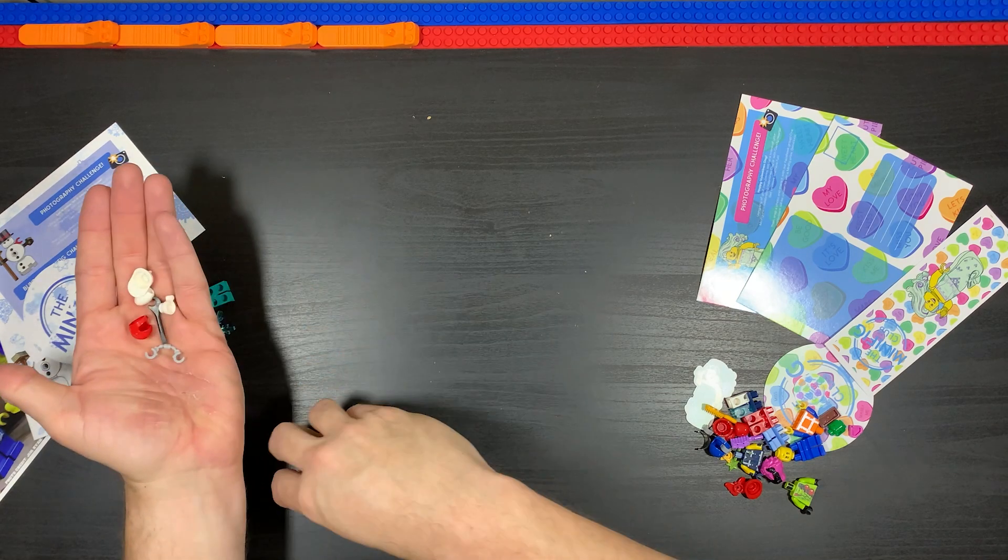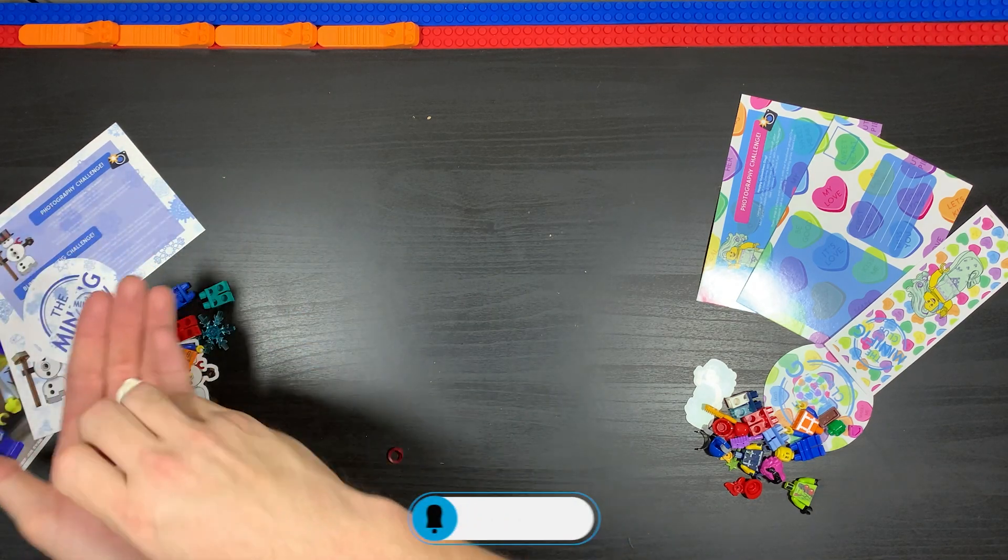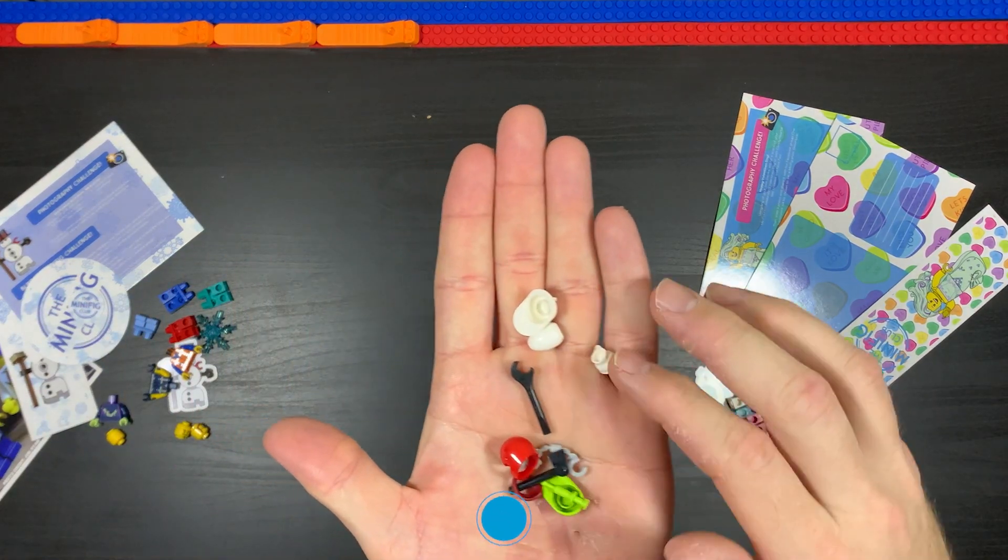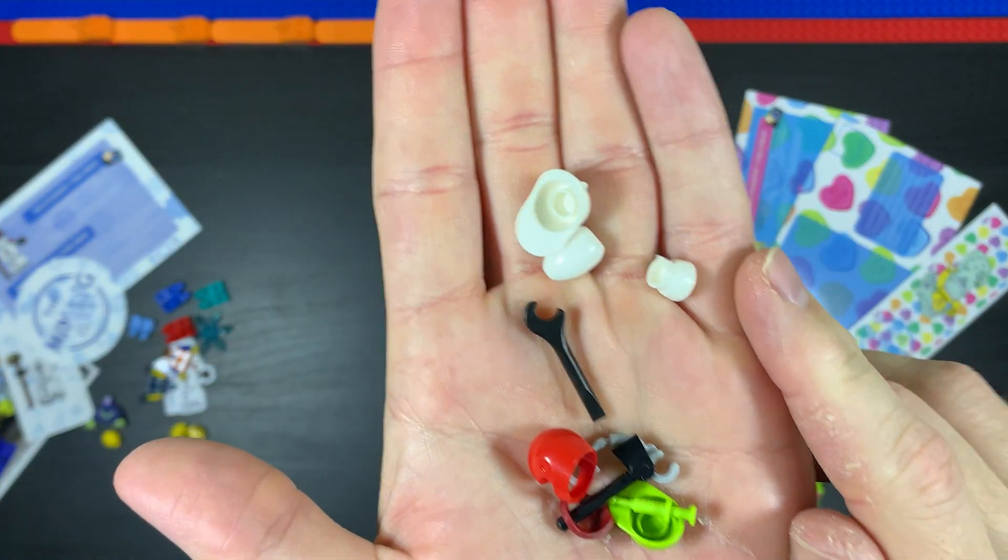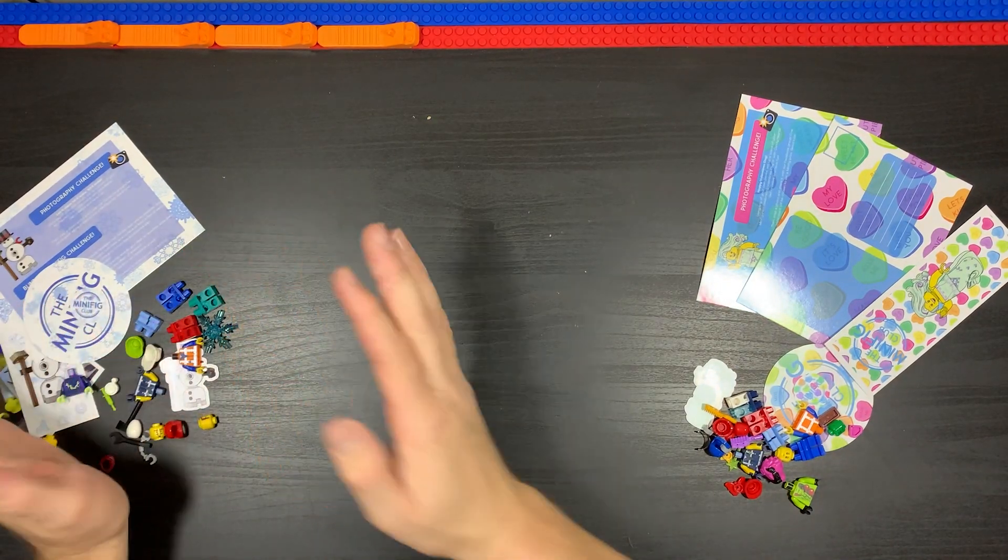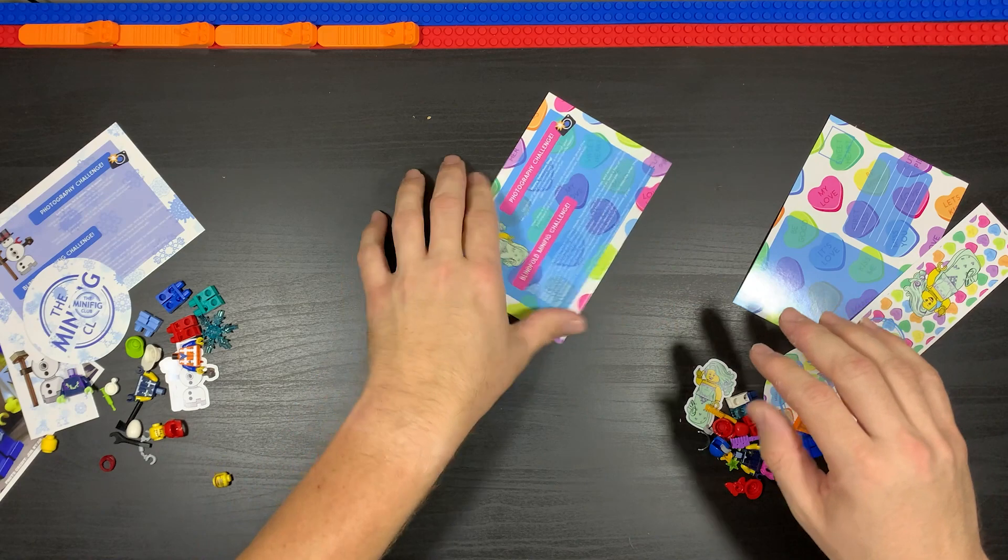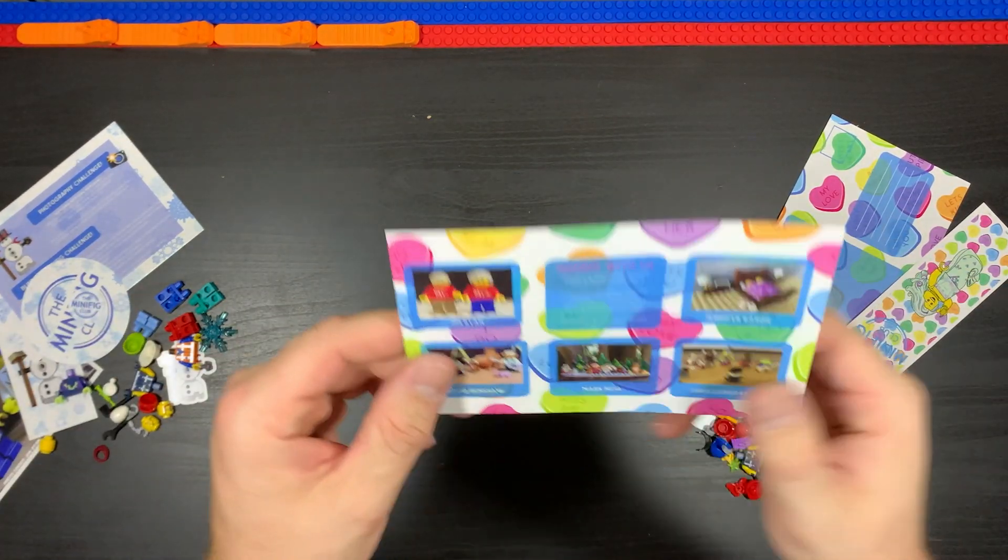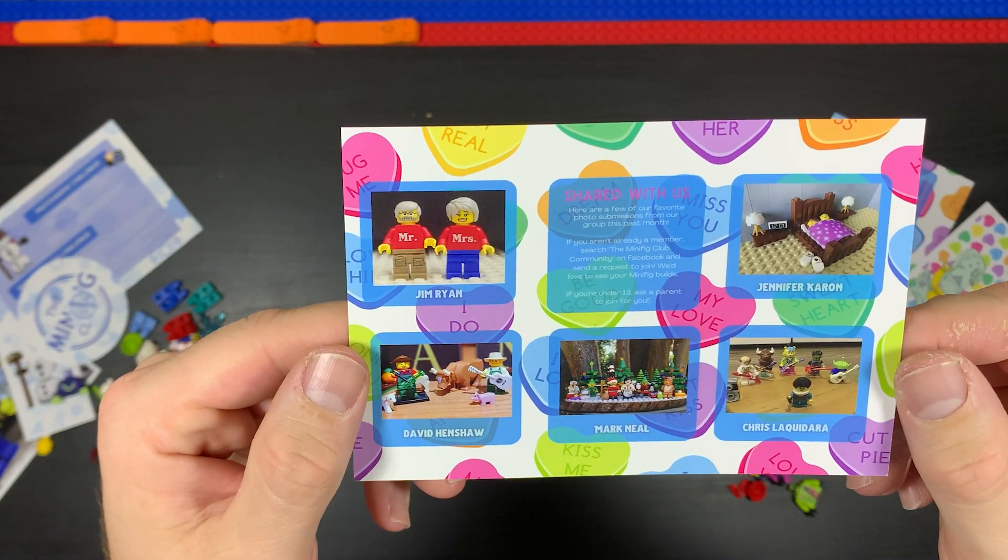Here's all the special items that we got. I'll put them in my hand here so you can see what we got. They tend to fly away, float away, roll away. There's our accessories for the January Minifig Club. Now let's direct our attention to February.